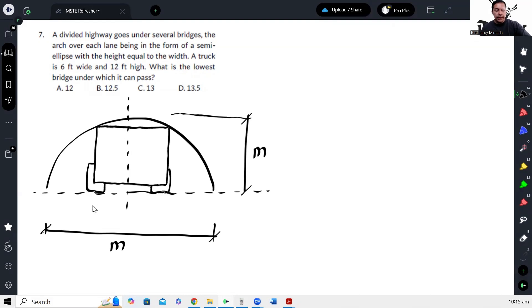The width of the truck is six feet. Okay, so what we're finding is the lowest possible bridge that it can pass through. That's why I positioned the truck snugly. This is the truck, so I made it a rectangle positioned tightly.